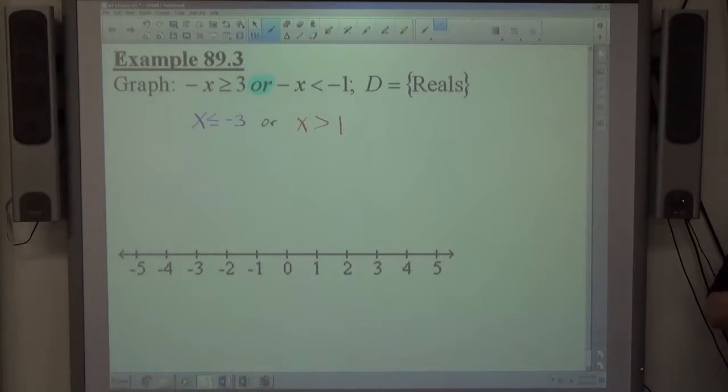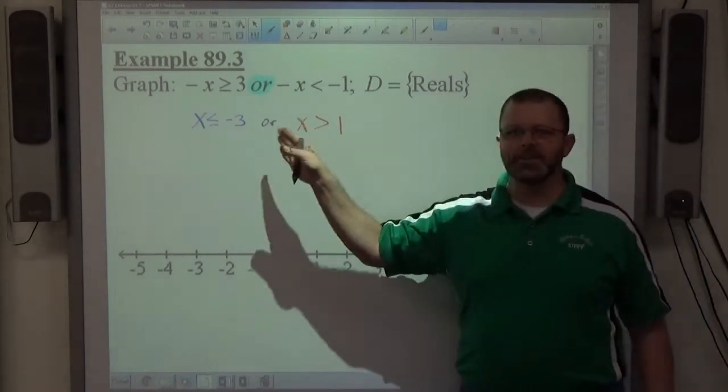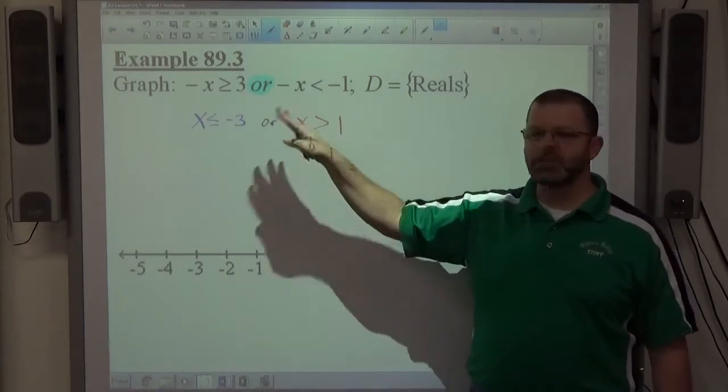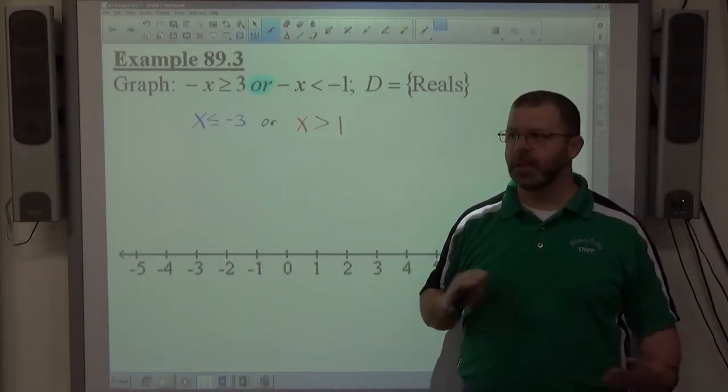Or simply means both inequalities are alive and well. They both matter just as much as each other. If the blue one's true, it doesn't matter if the red one's true, the whole thing's true. If the red one's true, it doesn't matter if the blue one's true, the whole thing's true. That's how it works.